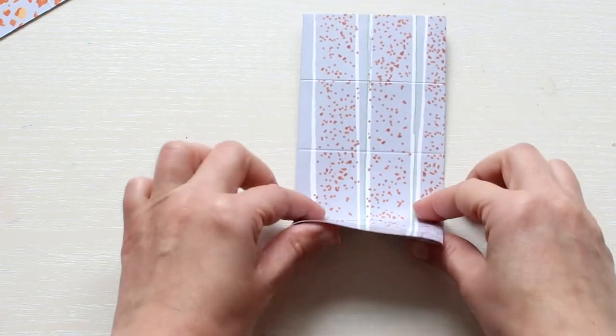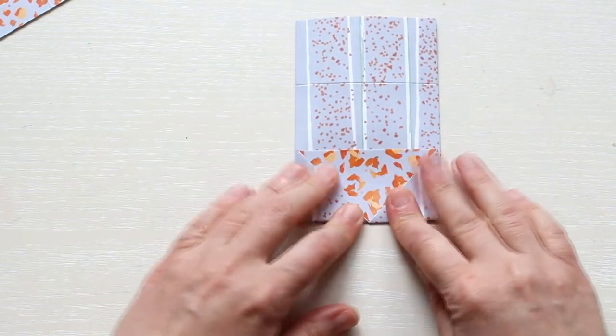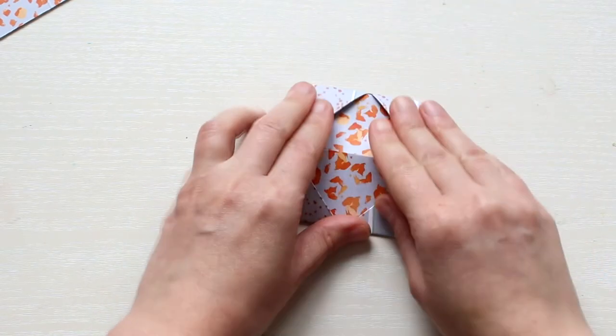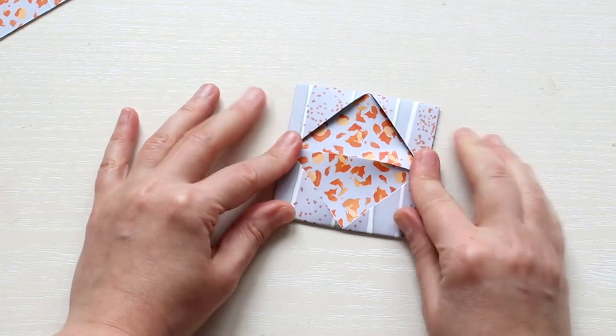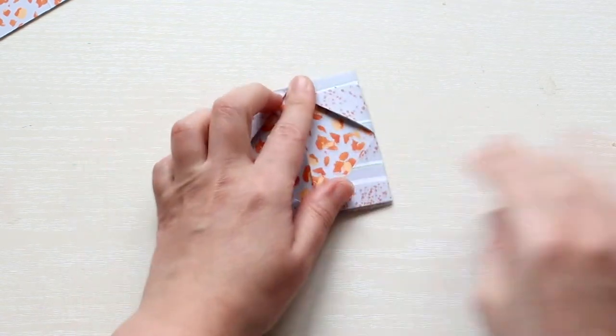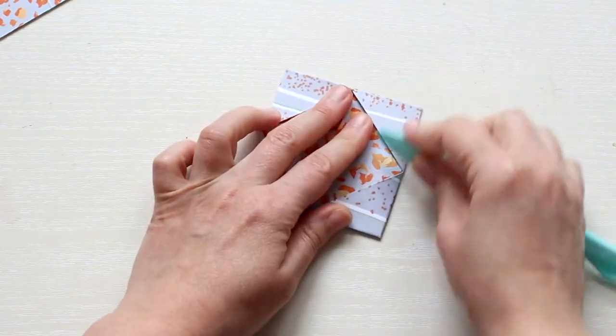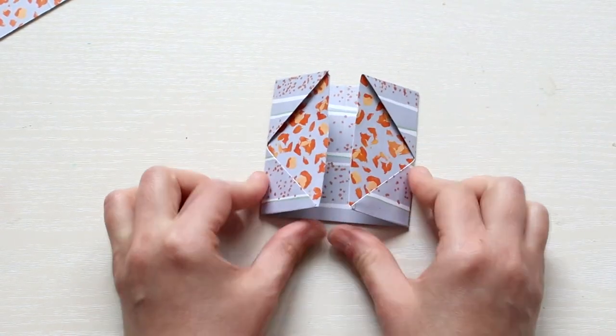Turn and fold all the score lines and fold all the corners to the top.